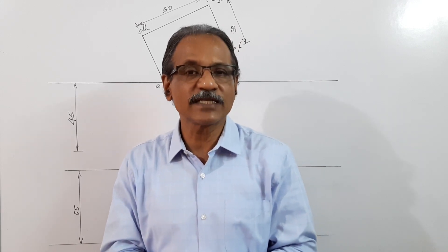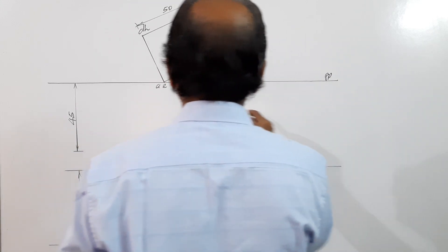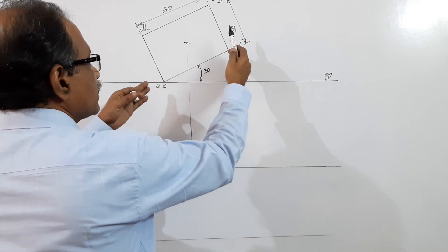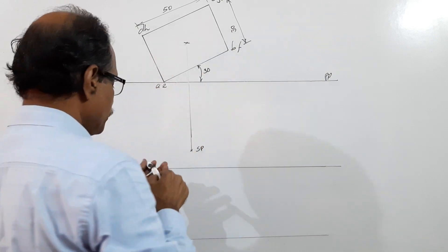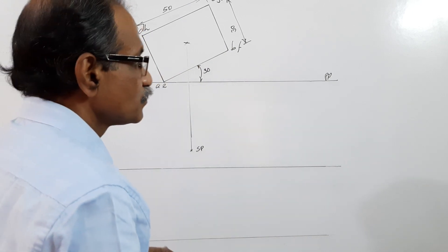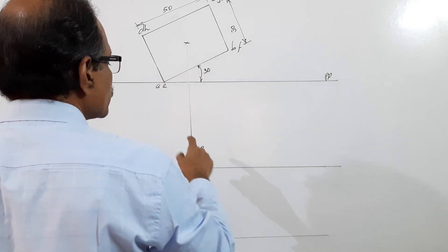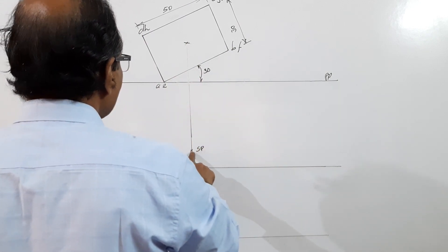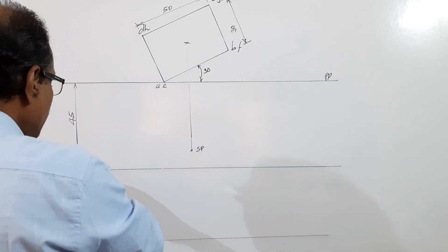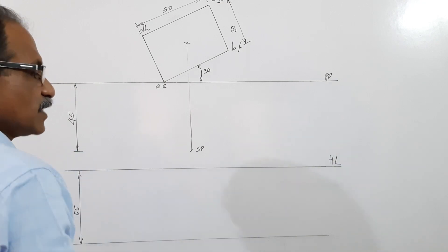The position of the station point is given as 45 in front of PP, 55 mm above GP, and the central plane passes through center of the box. First of all, I draw picture plane, taking a point on picture plane and draw a 30 degree line of 50 mm length and complete a rectangle 50 by 30. Then I draw the center, locate the center, and draw the center plane. On the center plane 45 mm in front, I locate SP station point.